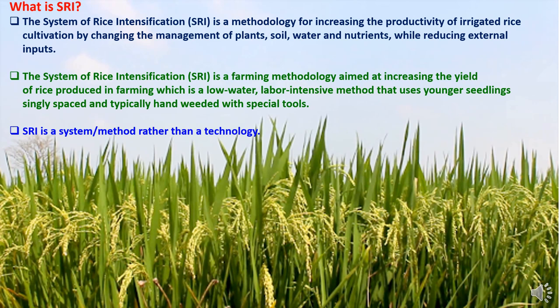Rice intensification is a method of changing the behavior of plants by modifying the soil, water, and nutrient usage. There is a manual weeding system using a cono-weeder or manual weeder. We are changing the growing behavior — the phenotype — of plants by altering the growing medium.